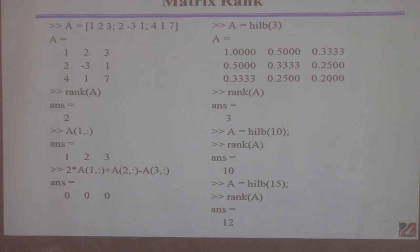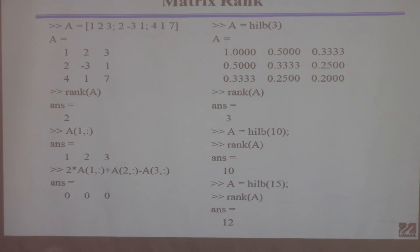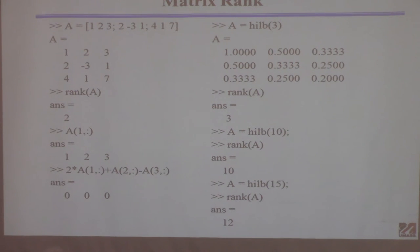The Hilbert matrix is an ill-conditioned matrix: as it grows large, some rows and columns become almost linearly dependent on each other. That's why it's the classic example of an ill-conditioned matrix. I created the three-by-three Hilbert matrix, calculated its rank — it's 3, as expected. Then the 10-by-10 Hilbert matrix also has rank 10.